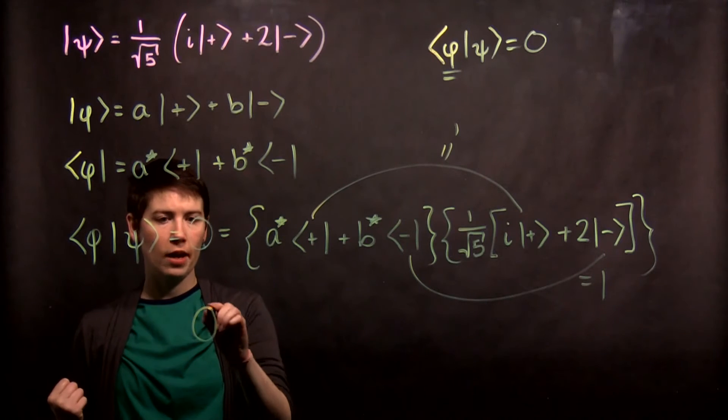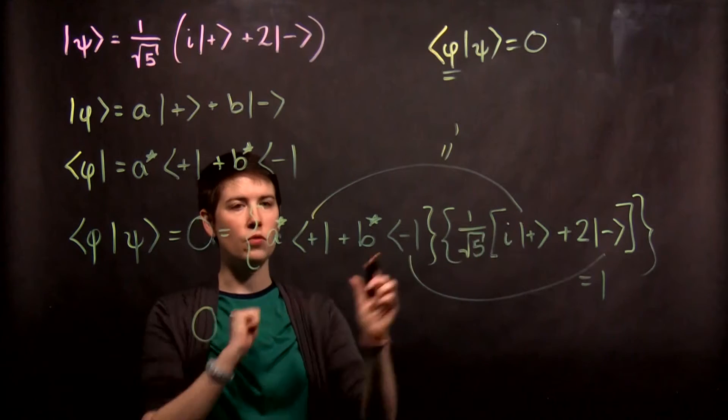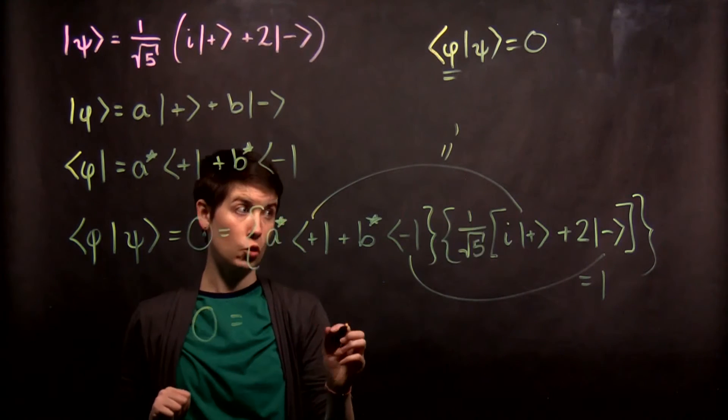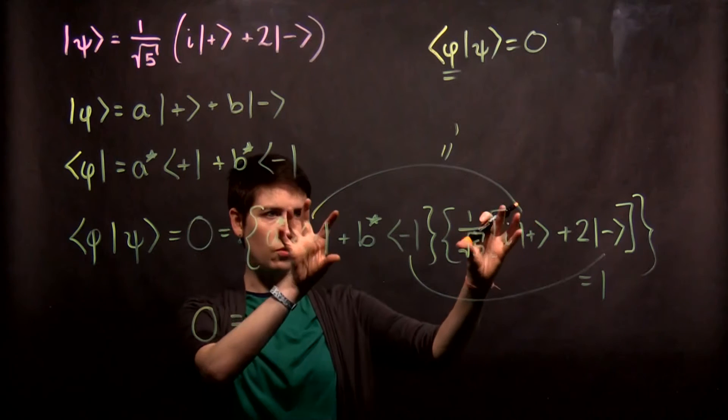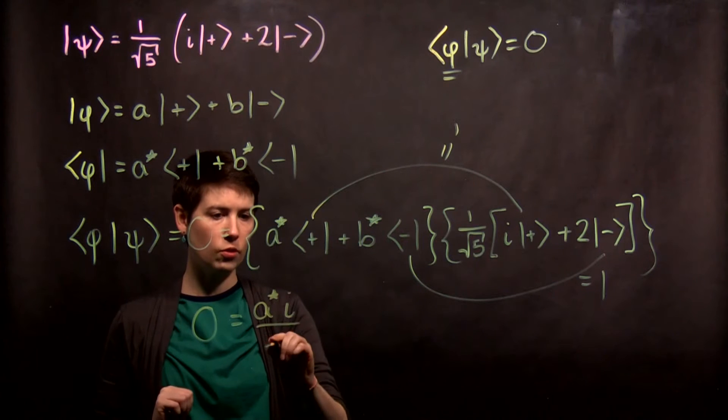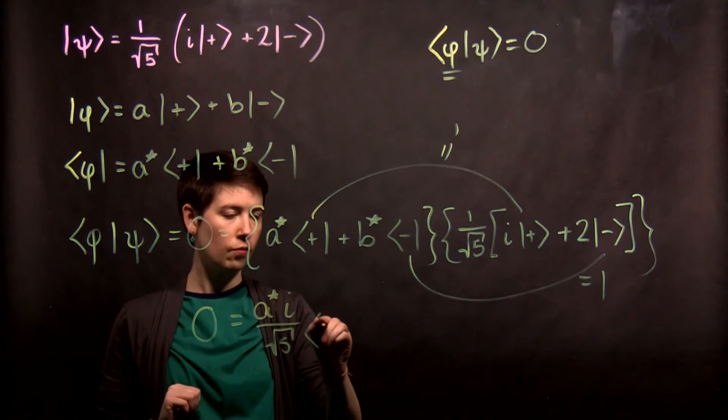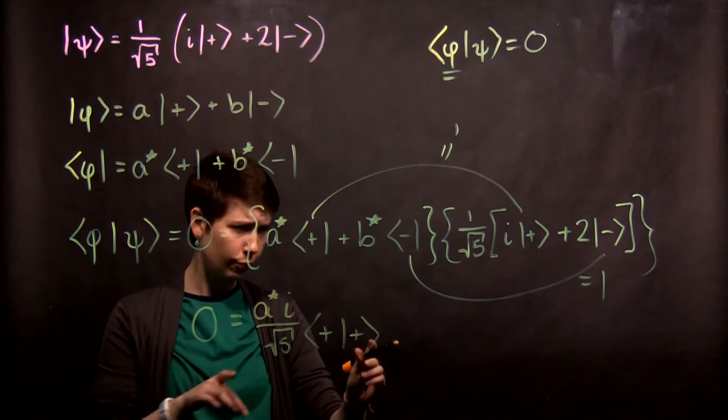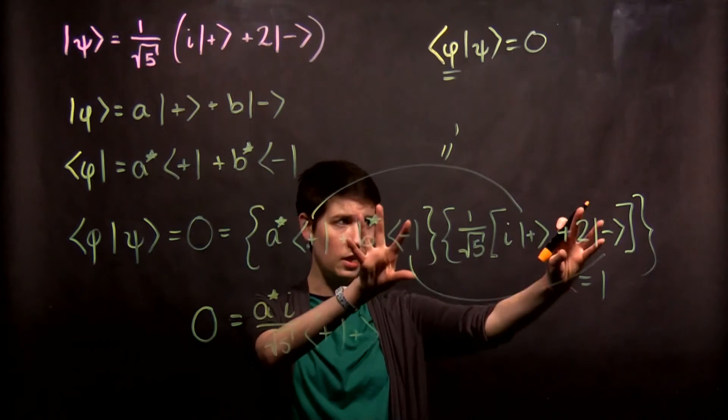So what we now have is that 0, and I'll take this first state, don't forget about this term. So I'm going to just first do this first term. So a star i over square root of 5 plus plus. And now I'm going to worry about this state.